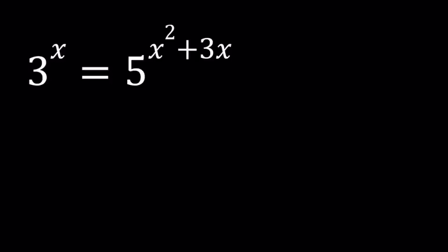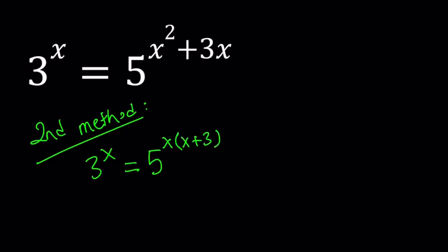Let's start with the second method. For my second method, I'm going to factor the exponent of the second one, so I'm going to write this as 5 to the power x times x plus 3. Here, I think it's kind of easy to see that x equals 0 will be a solution. Because if x is equal to 0, then we get 3 to the power 0 equals 5 to the power 0, which is of course true because they're both equal to 1. So x equals 0 satisfies this equation. Therefore, it's a solution.